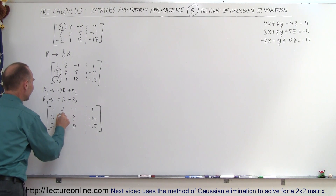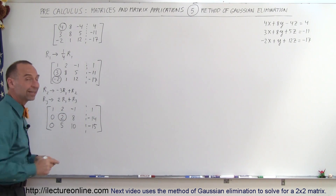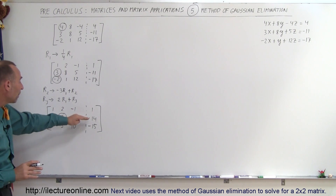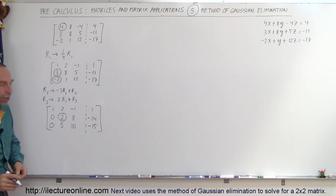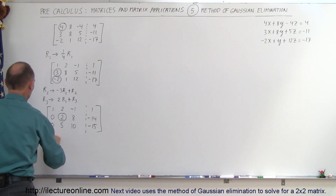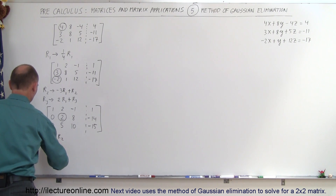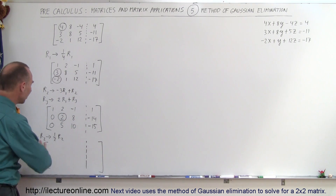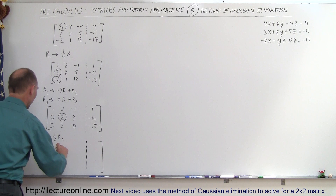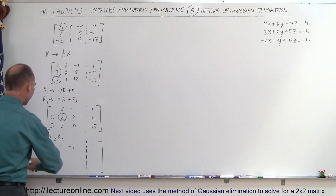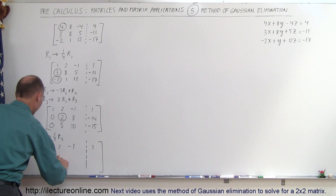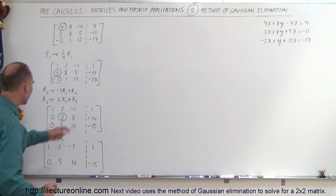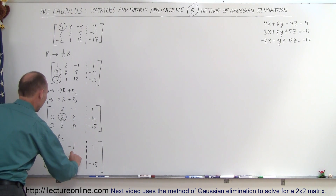Now I want to get a 1 on the diagonal in row 2. I can do that by multiplying that entire row by one-half, or simply dividing row 2 by 2. Row 1 stays the same: 1, 2, negative 1, and 1. Row 3 stays the same: 0, 5, 10, negative 15. The second row becomes 0, 1, 4, and minus 7.